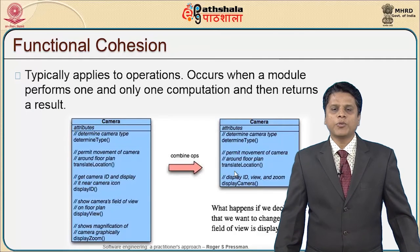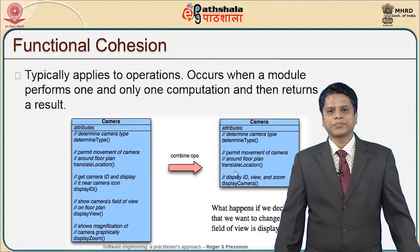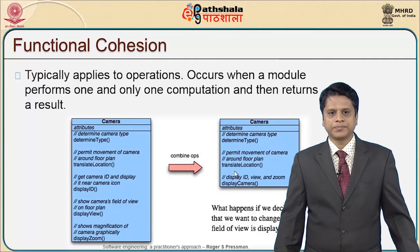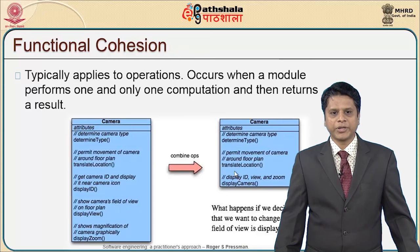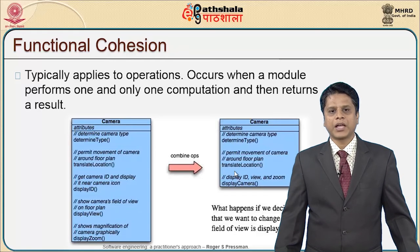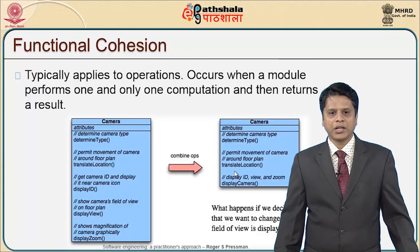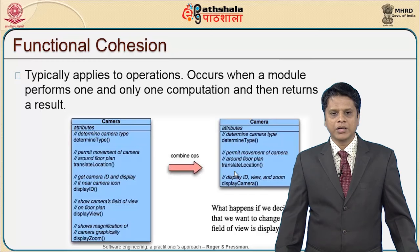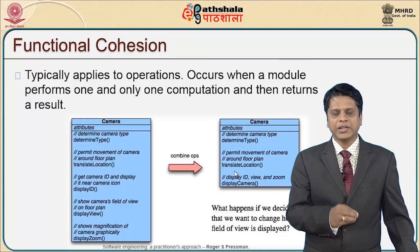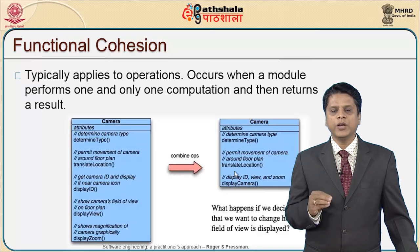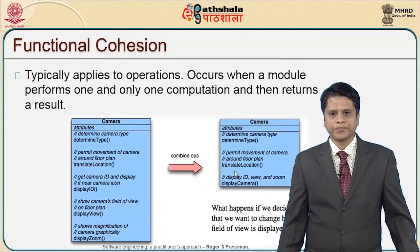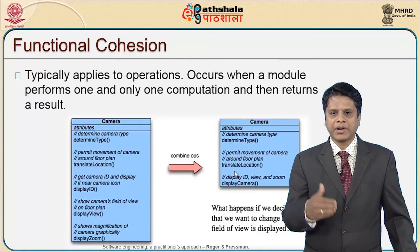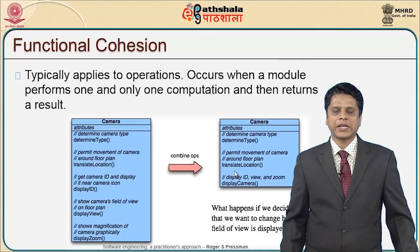Functional cohesion typically applies to operations and occurs when a module performs one and only one computation and then returns a result. For example, a camera component has a combination of operations and attributes: determine camera type, permit movement of camera around the floor, get camera ID, display it near the camera icon, show camera field of view on the floor plan, and show magnification of camera graphically. For a particular application, you might need only two or three — say, determine the type, translate the location, and display the camera.